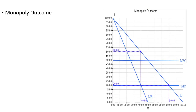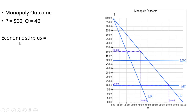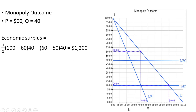Now looking at the monopoly outcome: the monopolist produces 40 units, so we calculate the area between the demand curve and the marginal social cost curve up to the 40th unit. There are two areas: a triangle with dimensions (100 minus 60) and 40, plus a rectangle of (60 minus 50) times 40, giving a total economic surplus of $1,200.